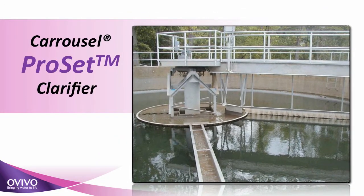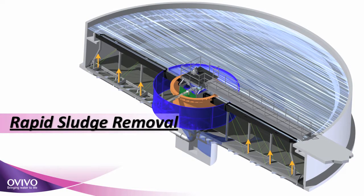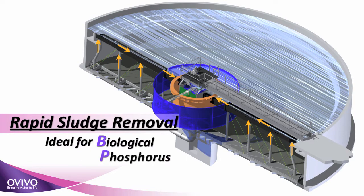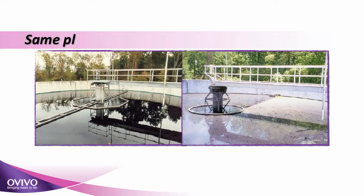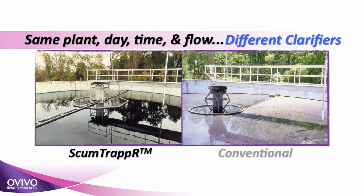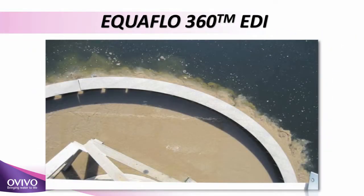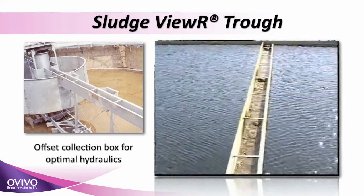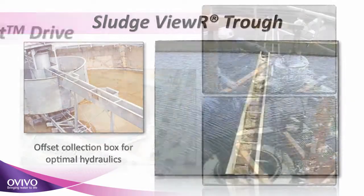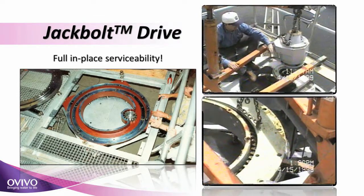We are also proud to offer the Carousel Pro-Set Clarifier for enhanced biological nutrient removal. The Pro-Set Clarifier rapidly removes sludge, minimizing the sludge blanket residence time. Because long sludge blanket residence times cause effluent phosphorus numbers to increase, the Pro-Set is your best solution for biological phosphorus removal. Standard features include the Scum Trapper Feed Well for a clean clarifier surface, the Equiflow 360 EDI for improved flocculation and resultant settling, the Sludge Viewer which keeps the RAS in plain sight, and the jack bolt drive allowing full disassembly of the drive without removal.